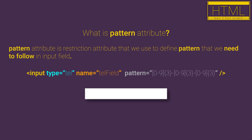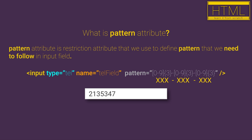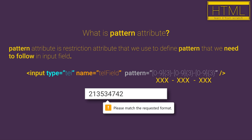For example, with the pattern attribute on a tel input type, we can define that the user needs to enter three digits, a dash sign, three digits, a dash sign, and three digits. If we do not follow our pattern, we will get a validation error.